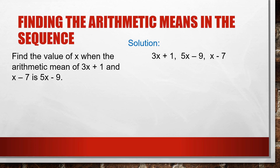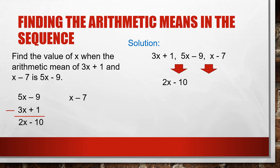We solve for the common difference. Taking the difference of (5x − 9) and (3x + 1): 5x minus 3x is 2x, and negative 9 minus 1 is negative 10, giving 2x − 10. Then taking the difference of (x − 7) and (5x − 9): x minus 5x is negative 4x, and negative 7 minus negative 9 is positive 2, giving negative 4x + 2.